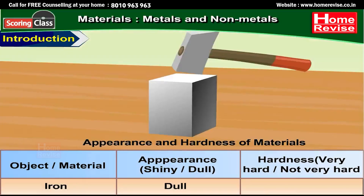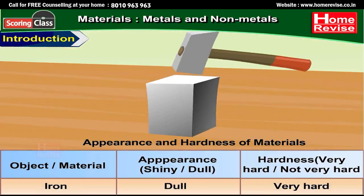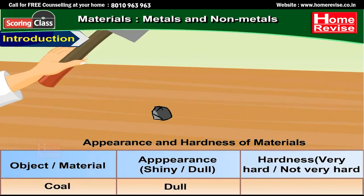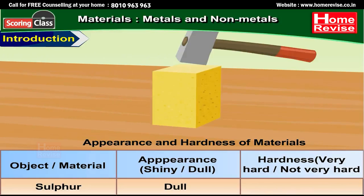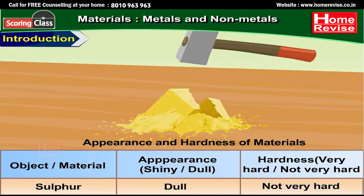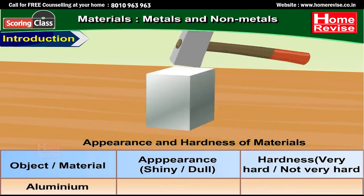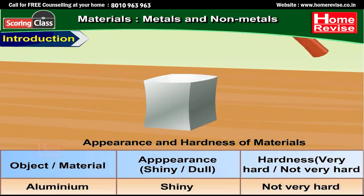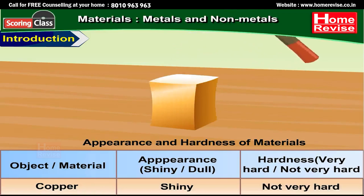Iron is dull in appearance and is very hard. Coal is dull in appearance and is not very hard. Sulfur is dull in appearance and not very hard. Aluminum is shiny in appearance and not very hard. Copper is shiny in appearance and it too is not very hard.